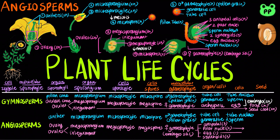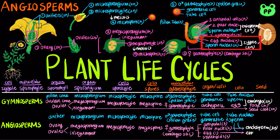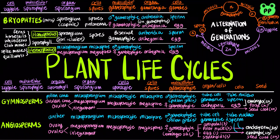After pollination, double fertilization occurs, in which one sperm combines with two polar nuclei to produce the triploid endosperm, which will serve as the food source for the future embryo. Another sperm fertilizes the egg to produce the diploid zygote, and the integument of the ovules develops into the seed coat. The ovule becomes the seed and the ovary becomes the fruit. More details about angiosperms will be covered in a future video.